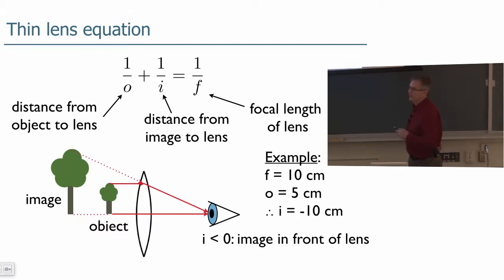And in this case, the thin lens equation, I think you can pretty quickly verify, gives that the image is equal to minus 10 centimeters. Now notice that you get a negative sign here. We have to be very careful of our positive and negative sign convention. I less than O means the image is in front of the lens. And we're going to make that very clear.